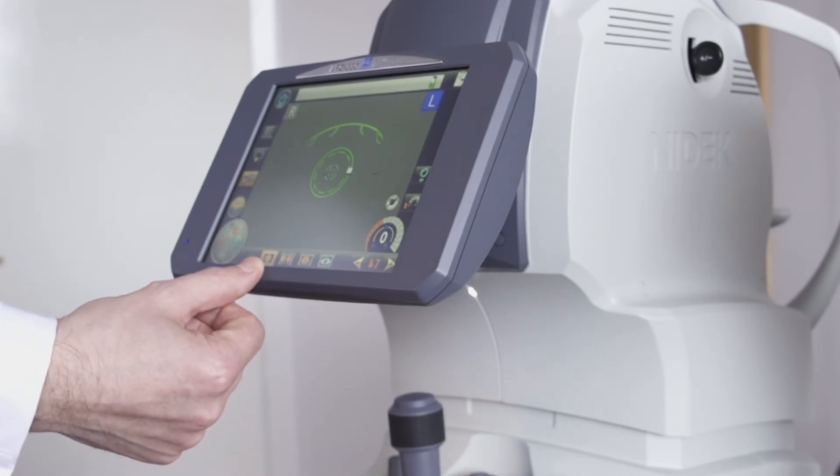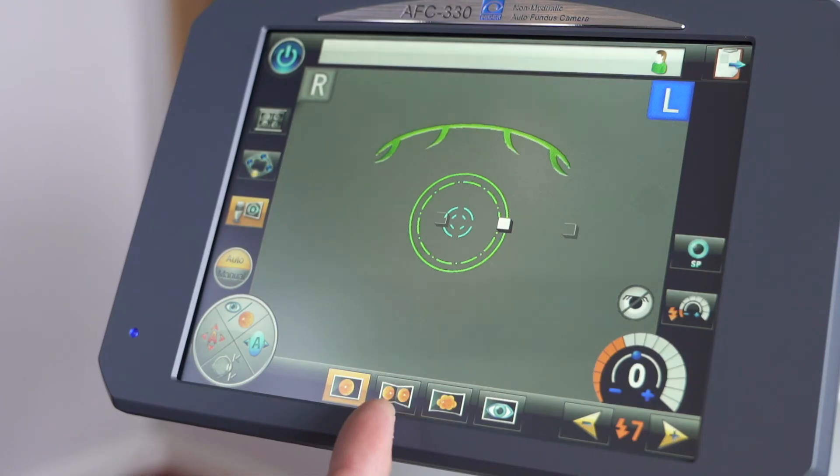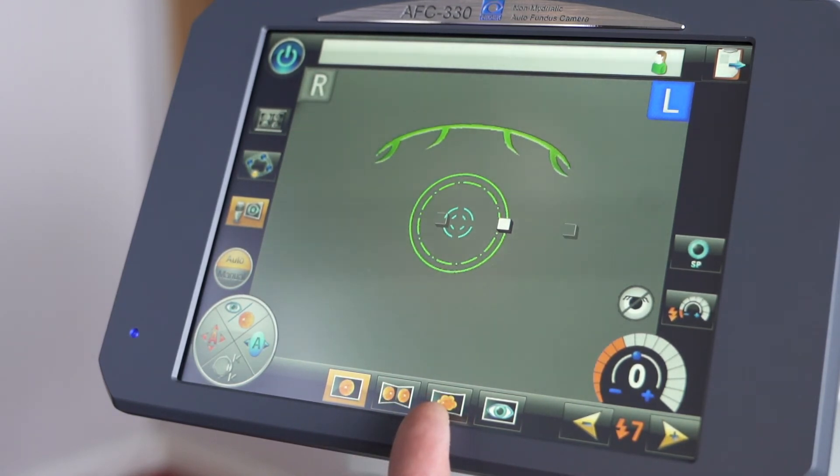This is our standard one shot of the fundus. This icon is able to take a stereo image of the fundus. This icon allows us to take a panoramic shot of the fundus. And this icon allows us to take an anterior shot of the eye.